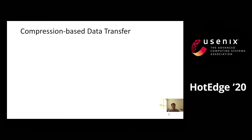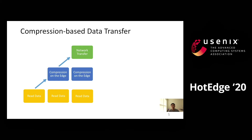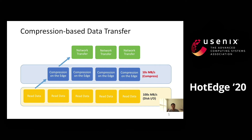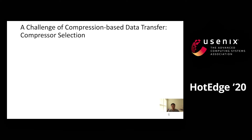We believe data compression can mitigate these challenges. Compression-based data transfer consists of three pipelined steps: first, data are read from disk into memory; second, data are compressed in memory; finally, compressed data are transferred from edge to cloud through the wide-area network. Storage bandwidth can easily achieve several hundreds of megabytes per second, whereas compression and network transfer throughput is usually tens of megabytes per second. Therefore, CPU-bound data compression and network-bound data transfer are the main bottlenecks, creating a compressor selection challenge.